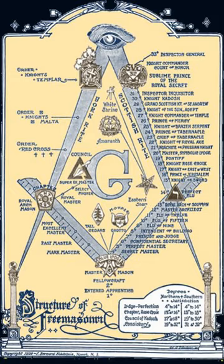International Order of the Rainbow for Girls: young ladies from 11 to 20 are eligible. The Rainbow Girls have assemblies in Aruba, Australia (Queensland, New South Wales and South Australia), Bolivia, Brazil (Distrito Federal, Espírito Santo, Mato Grosso, Mato Grosso do Sul, Minas Gerais, Paraná, Rio de Janeiro, Santa Catarina, São Paulo and Tocantins), Canada (Ontario and New Brunswick), Italy, Paraguay, the Philippines, Puerto Rico and Romania. There are currently Rainbow assemblies in every state within the United States except Delaware, Utah and Wyoming. Rainbow has had assemblies, mostly due to American military presence, in Cuba, France, Germany, Japan, Mexico, Panama, the Republic of China, and Vietnam.